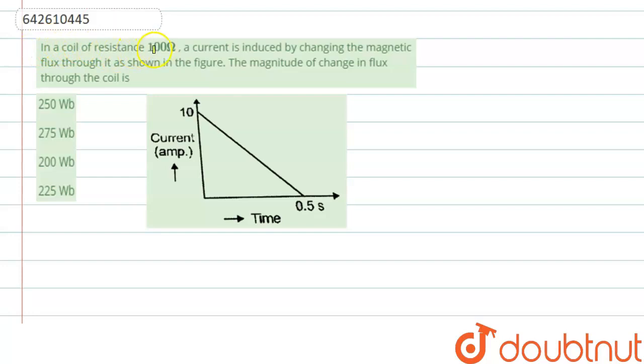Question says that in a coil of resistance 100 ohm, a current is induced by changing the magnetic flux through it as shown in the figure. The magnitude of change in flux through the coil is...